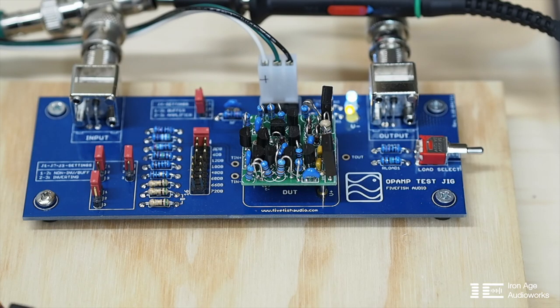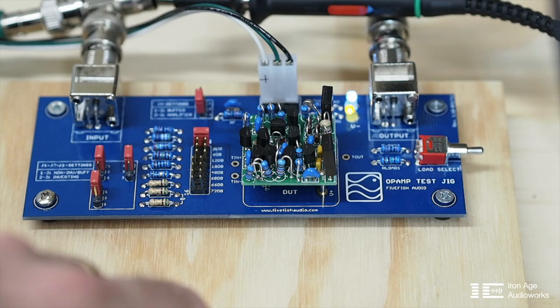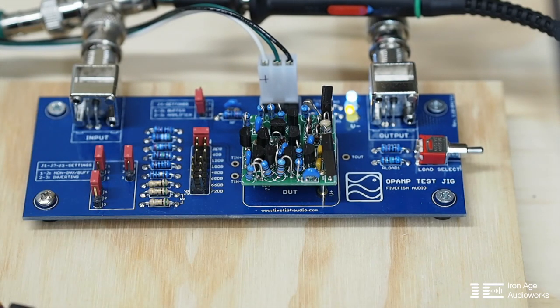Before we get into the details of the oscilloscope, let me describe what we're testing. We're using one of these FiveFish op-amp test jigs. On it we have an M2 operational amplifier, designed and made by us at Iron Age Audio Works.